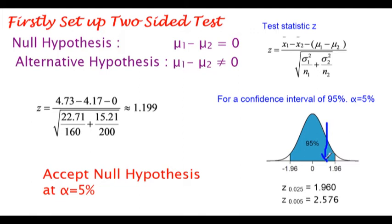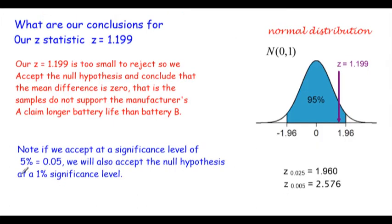We're going to accept the null hypothesis at the 5% level of significance. Let's actually have a look at what this all means. Here's the statistic.